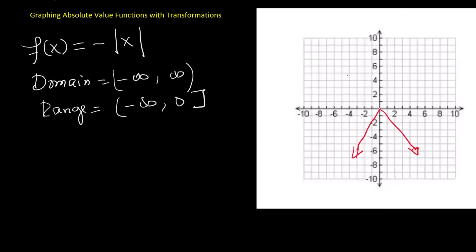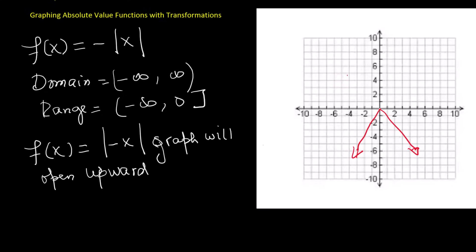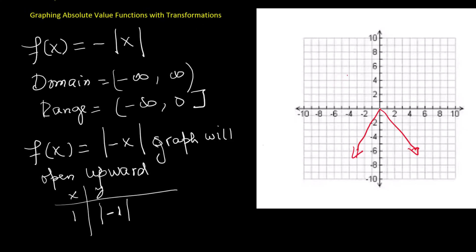If the negative sign is inside, like f of x equals absolute value of negative x, nothing changes. The graph still opens upward. That's because the absolute value of any negative becomes positive. For example, plug in 1 — the inside becomes negative 1, but the output is still positive 1. So, a negative on the outside flips the graph; a negative on the inside does not.